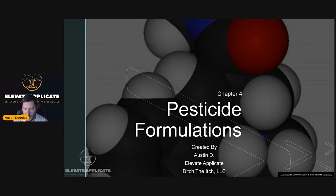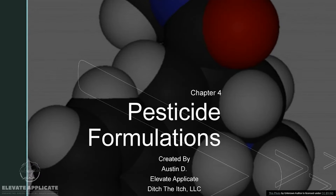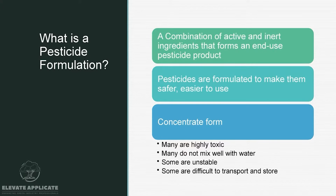So we have pesticide formulations. What is a pesticide formulation? It's a combination of active and inert ingredients that forms an end-use pesticide product. Pesticides are formulated to make them safer and easier to use. Concentrate forms can be highly toxic, many do not mix well with water, some are unstable, and some are difficult to transport and store.